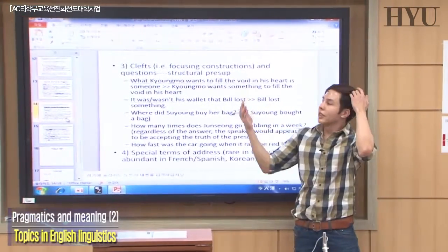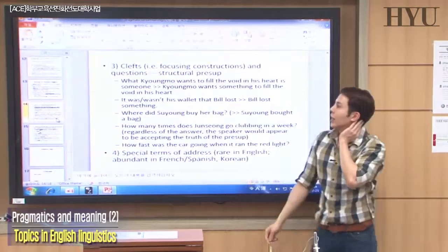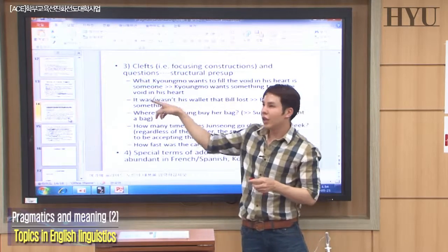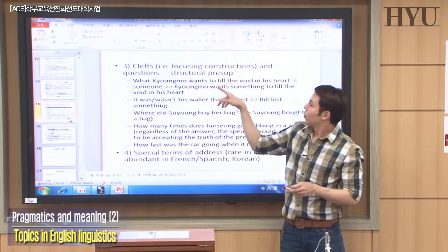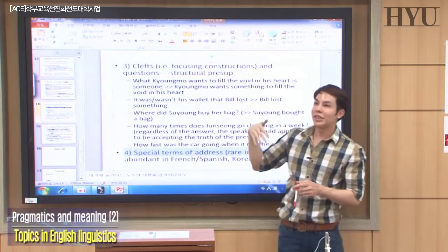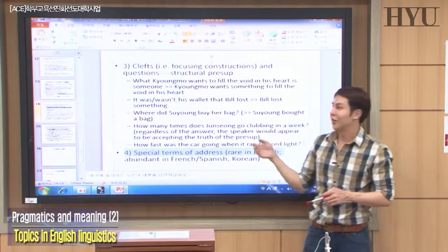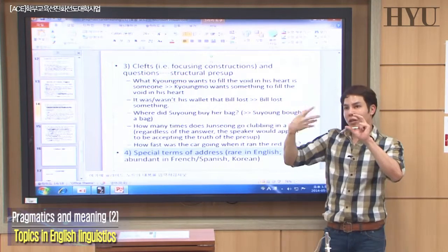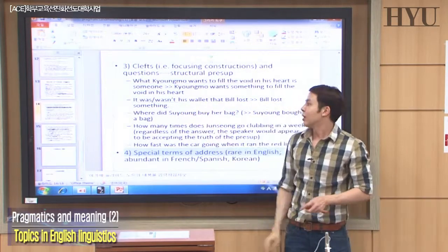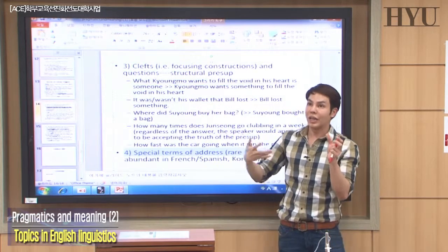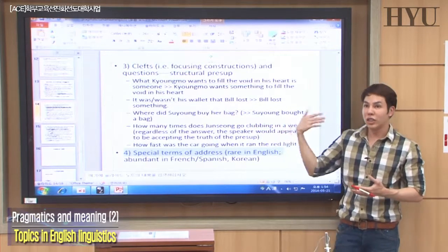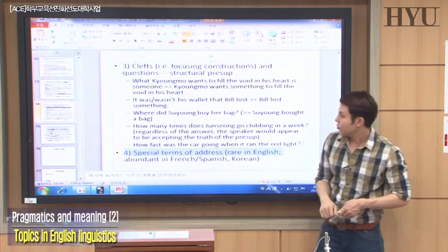Cleft sentences are another trigger — a syntactic operation where you front something using a wh-word or 'it is.' For example: 'What Kyeong Mo wants to fill the void in his heart is someone' — it presupposes that he wants something or someone to fill the void. 'It wasn't his wallet that Bill lost' — Bill lost something, though not necessarily a wallet. 'Where did Sooyoung buy her bag?' — it presupposes she must have bought her bag before. 'How many times does Joonsong go clubbing in a week?' — presupposes he goes clubbing.